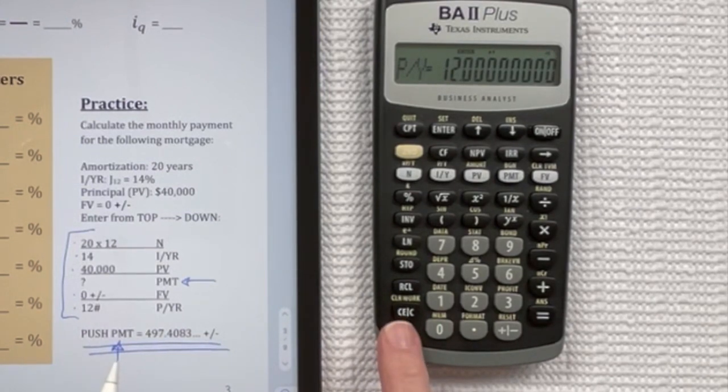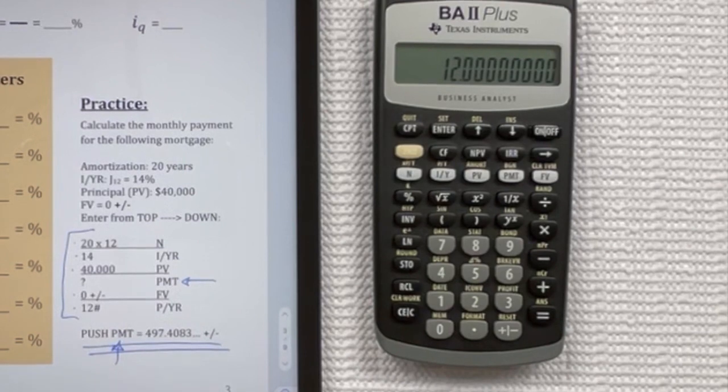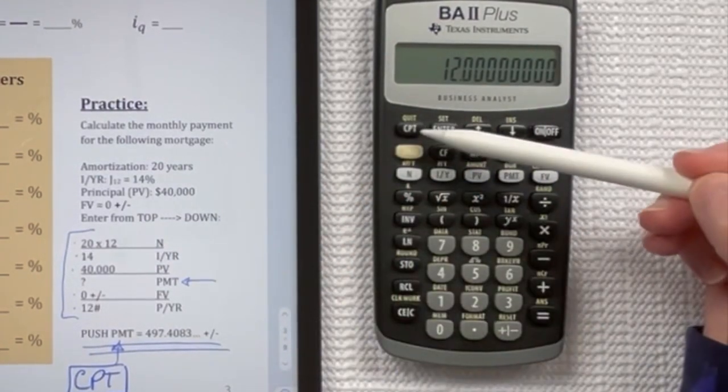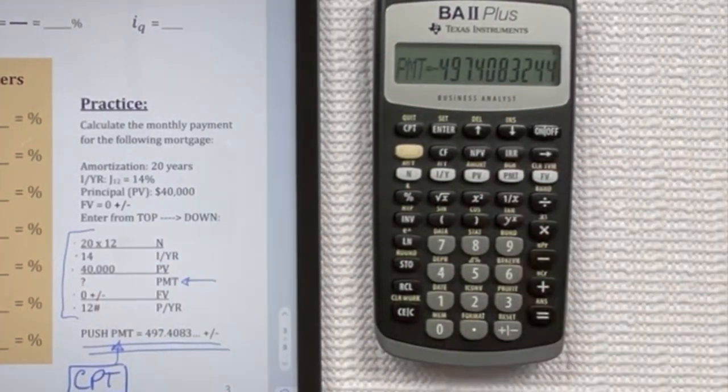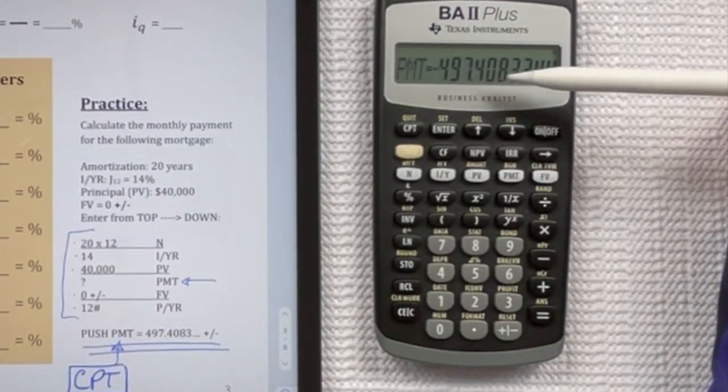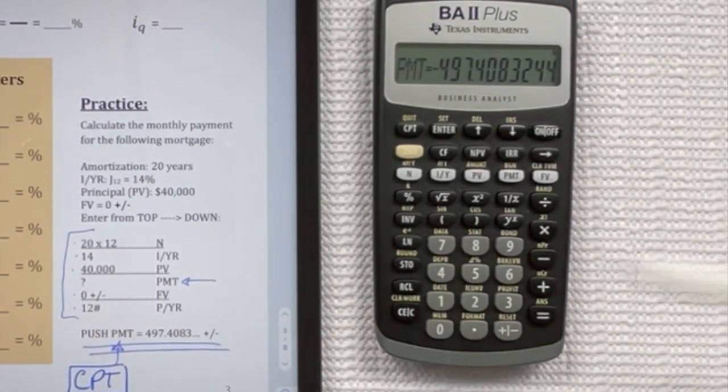So then because we're trying to find payment, and we're in this table, we need to exit the table. And then to get the payment amount, you need to use the compute button. So you're going to push compute, which is here, and then your payment key. And you see that I get the correct answer, negative 497.408.